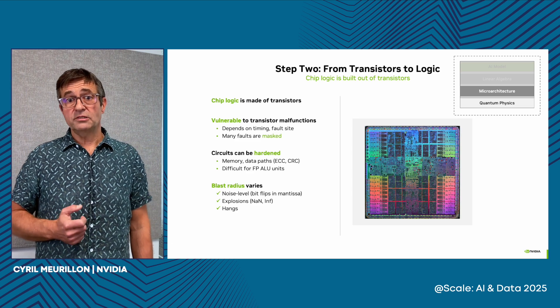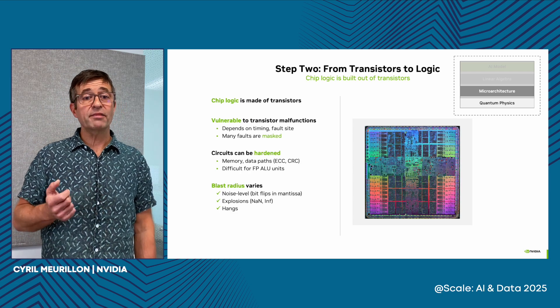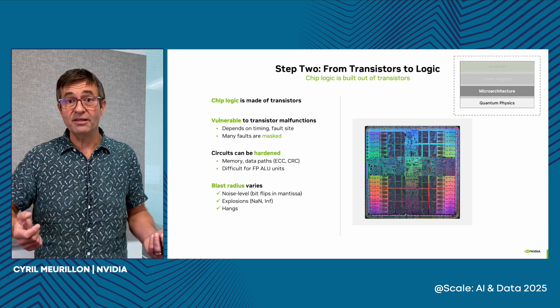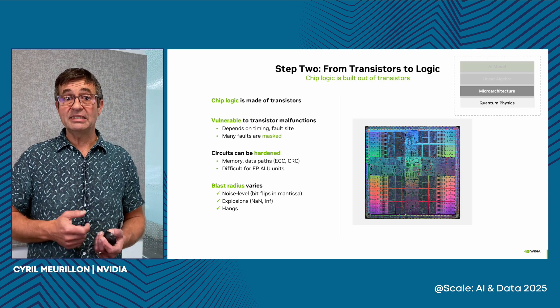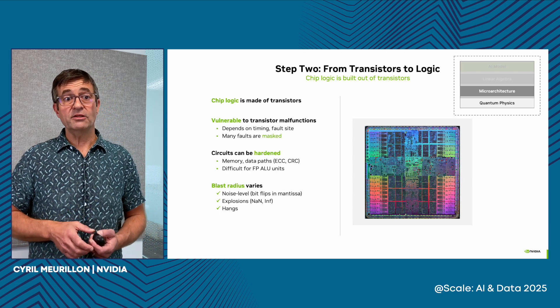When a faulty transistor does cause an execution error, the blast radius can vary enormously. The fault may manifest itself as a tiny math error on the sixth decimal of a calculation, or it may cause that same calculation to be off by a billion, or even be flagged incorrectly as incomputable. In other situations, the fault causes a GPU to reach an invalid state and just hang. In the case of a hang, a watchdog is likely to detect the problem and throw an exception — at that point the fault is no longer silent. Calculation errors, on the other hand, are more likely to go unnoticed.